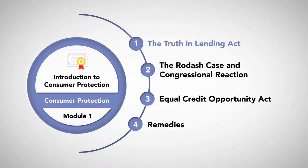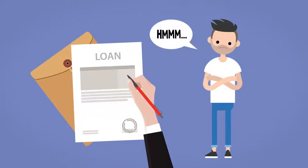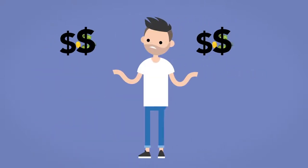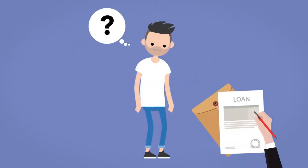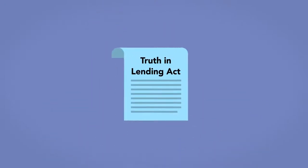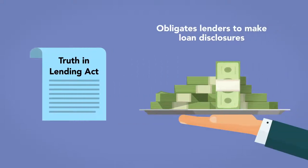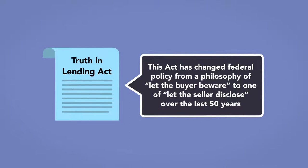The Truth in Lending Act. Borrowing money can be a daunting process. A first-time applicant for a loan or line of credit may not fully understand what he's signing up for, and may be confused as to whether he's signing up for the best possible deal. It may appear easy to just fill out a form, but a consumer may have a difficult time understanding how a credit transaction works and all of the terms associated with it. The 1968 Truth in Lending Act obligates lenders to make loan disclosures so that consumers could compare credit costs and become fully aware of the costs of credit offered by a financial institution. This act has changed federal policy from a philosophy of 'let the buyer beware' to one of 'let the seller disclose' over the last 50 years.